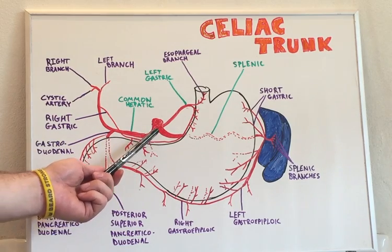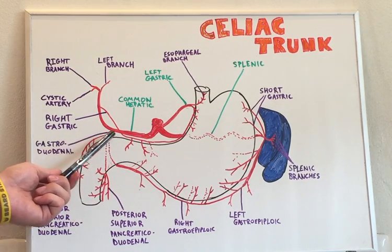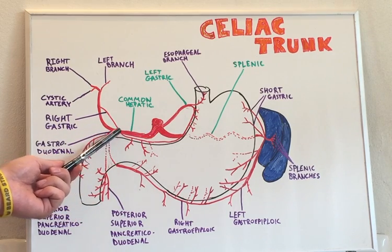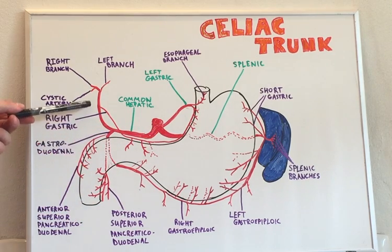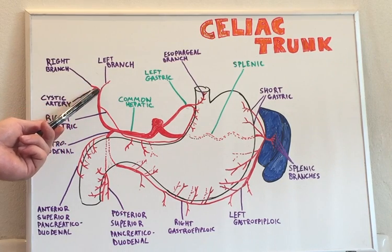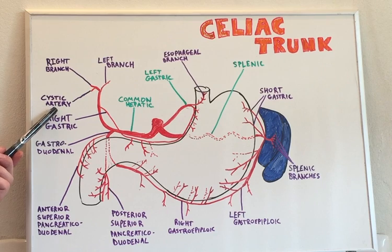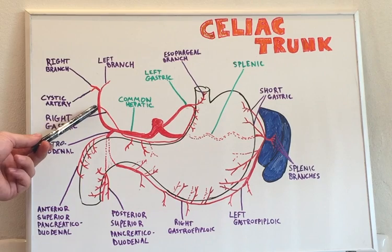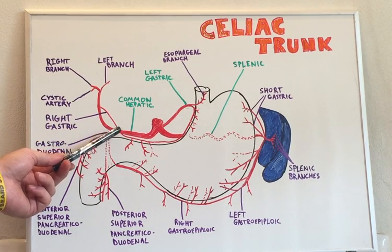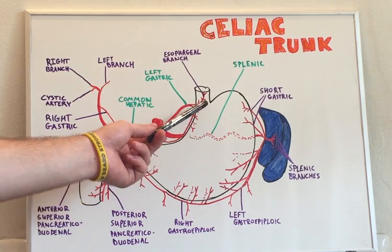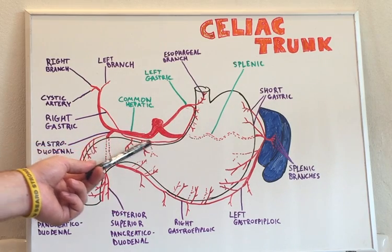Coming over to the common hepatic branch, it has quite a variety of branching. The common hepatic comes up and branches into the right and left hepatic branches, as well as the cystic artery. On its course, it has a right gastric branch, which completes the lesser curvature of the stomach and anastomoses with the left gastric branch.